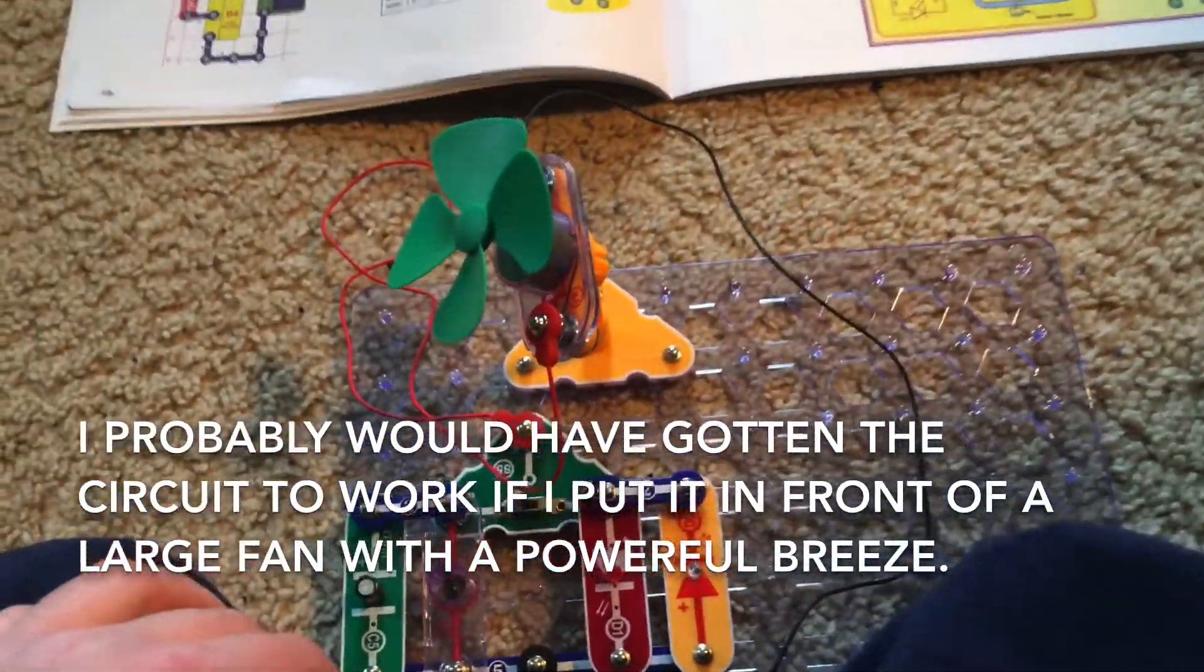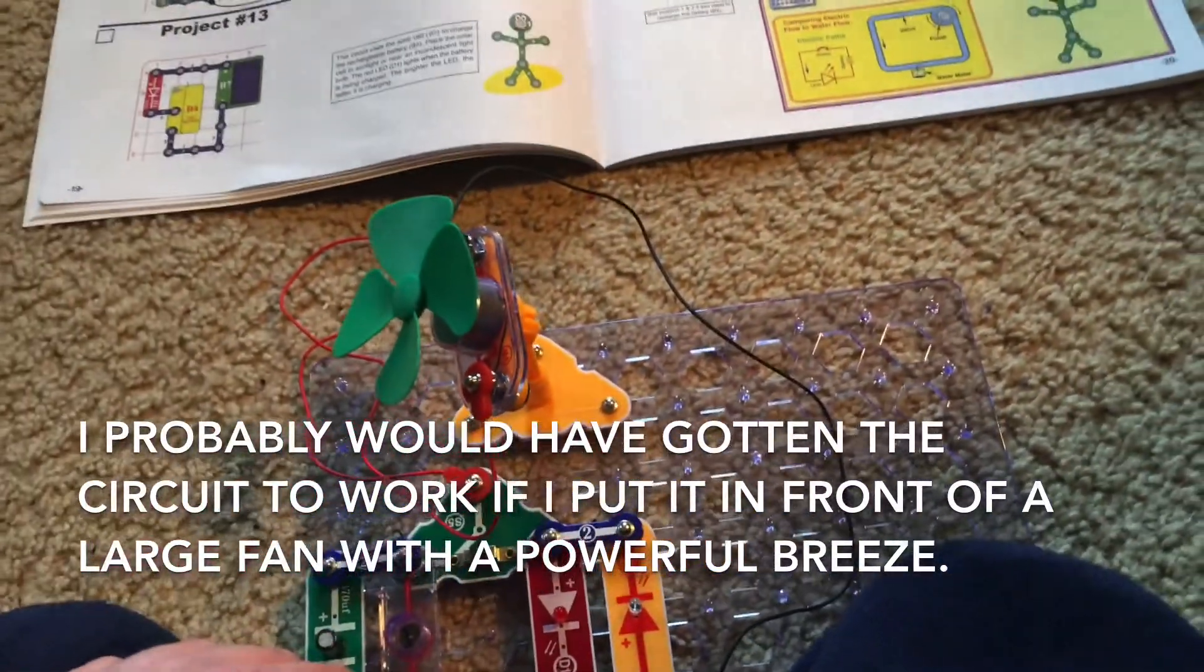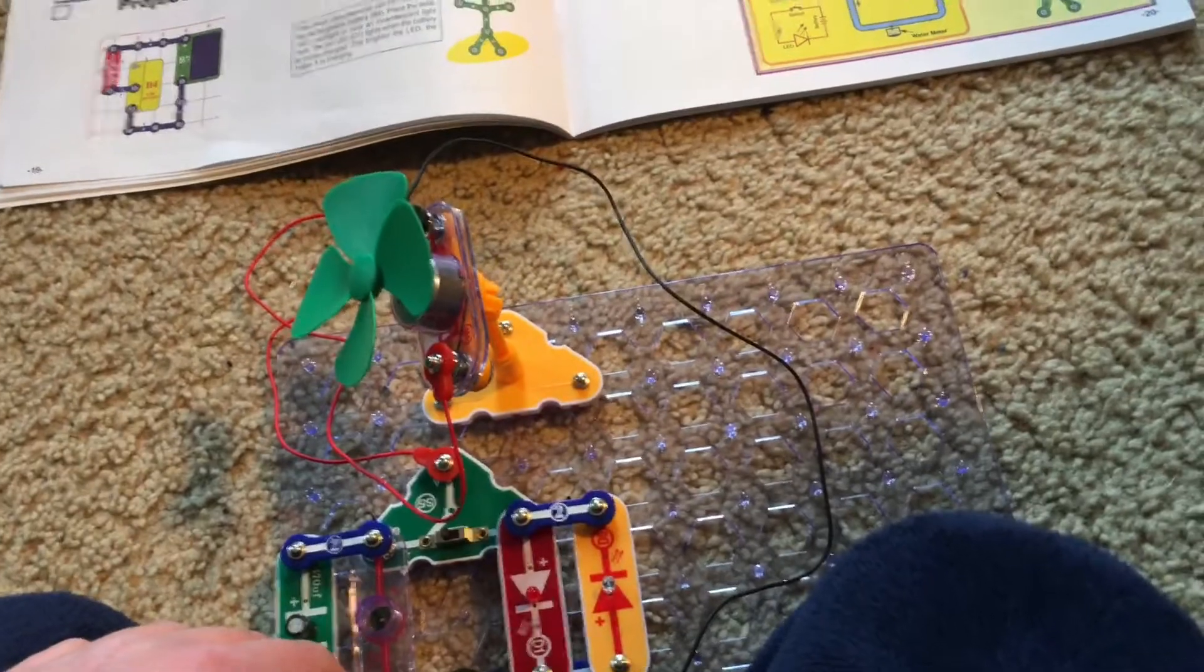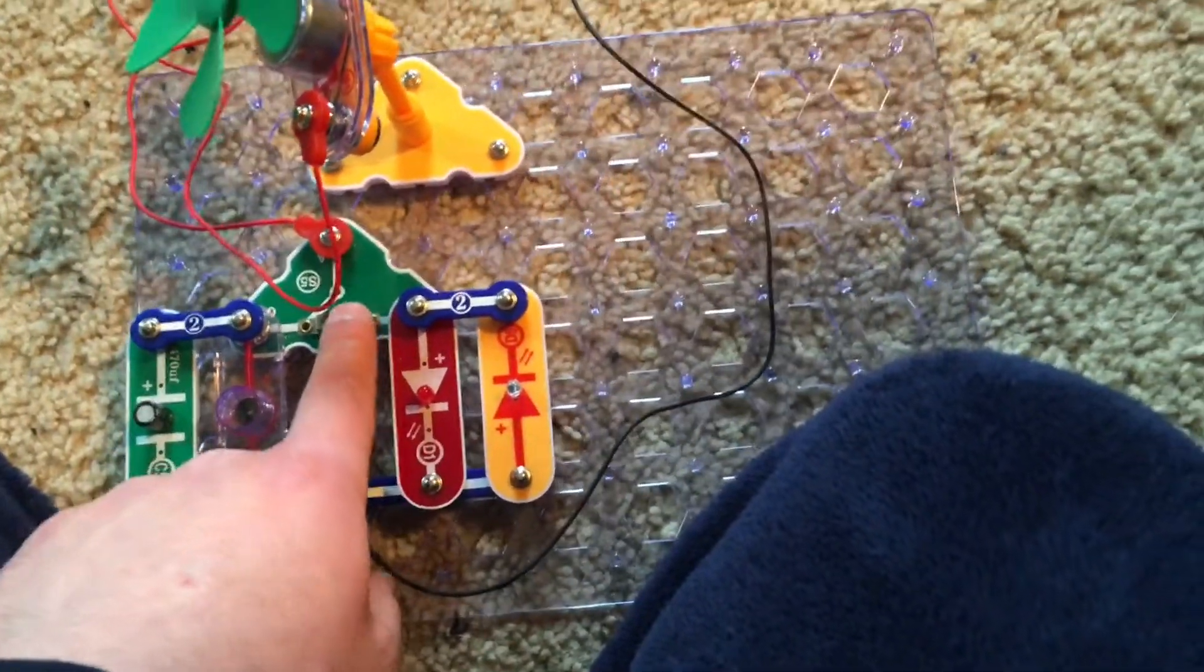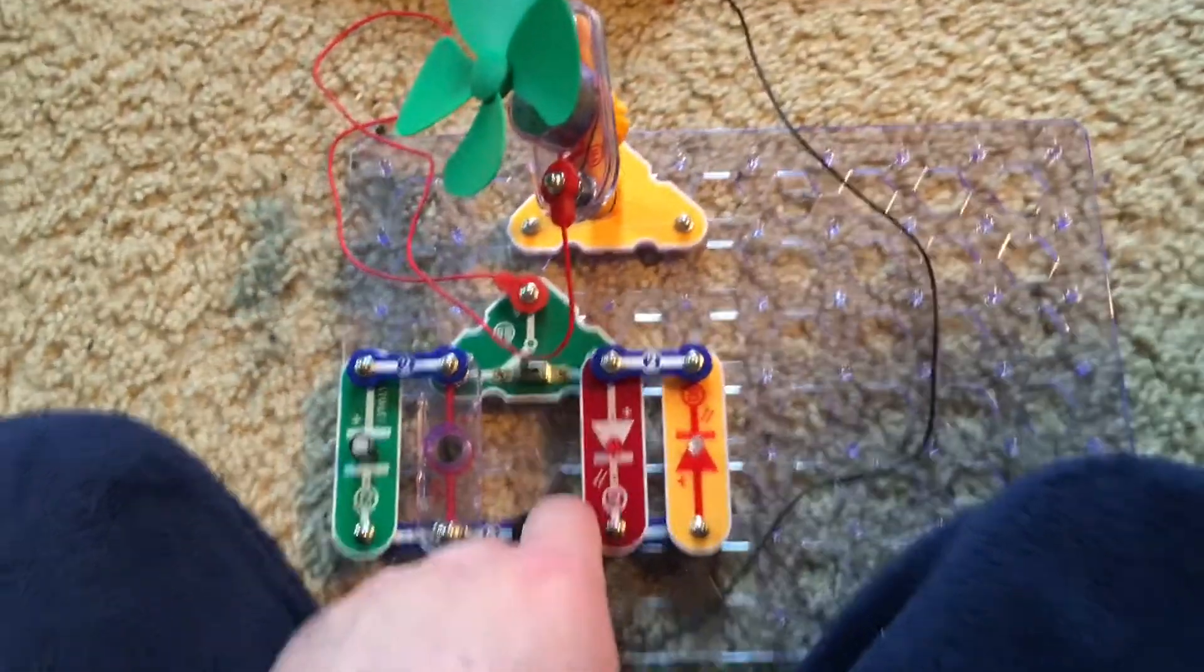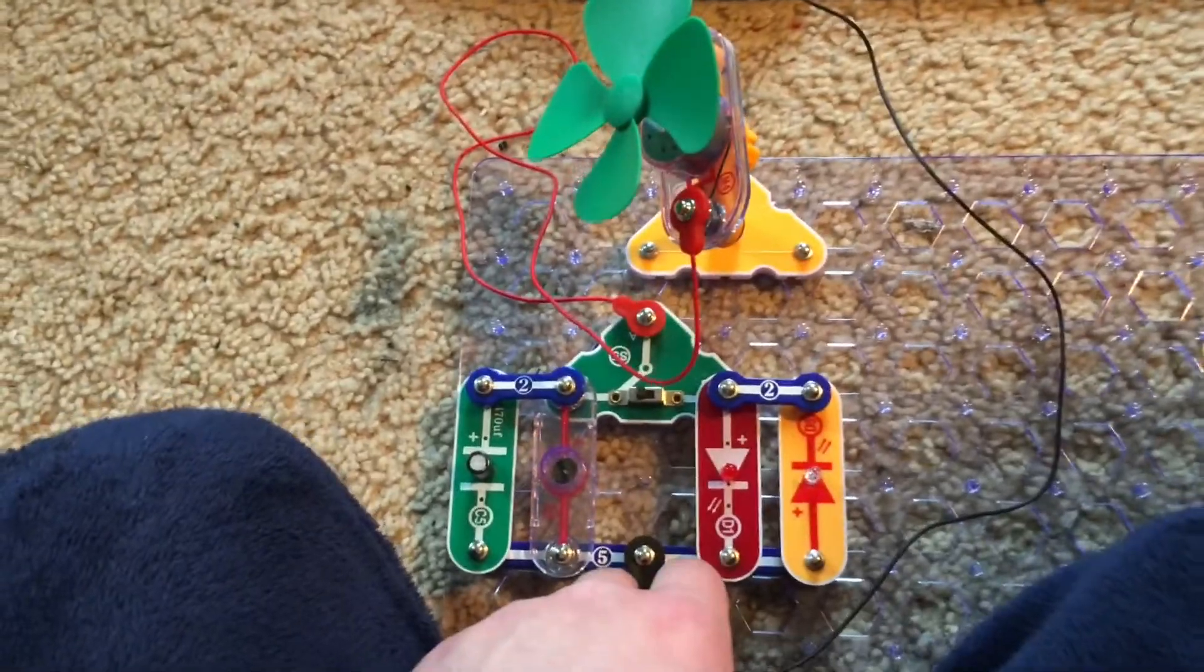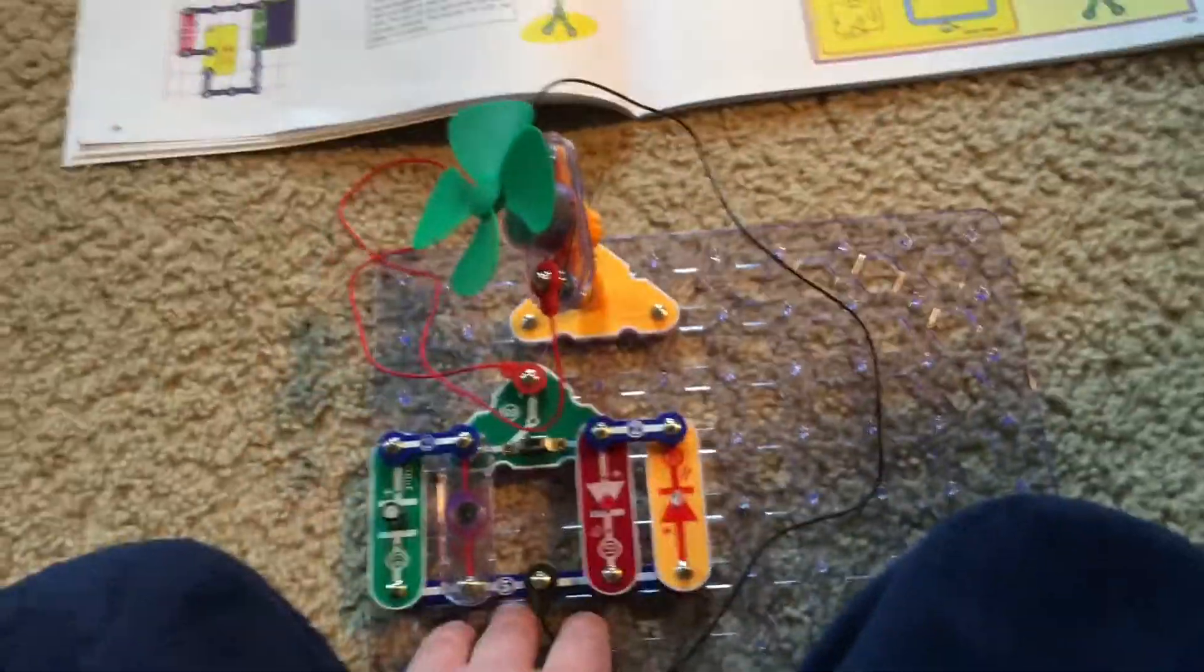So if I place the small fan in front of a big one then it might spin fast enough to activate some of these components. There are different combinations in which the LEDs and horn could work which are determined by the setting of the slide switch or the direction the wind is blowing.